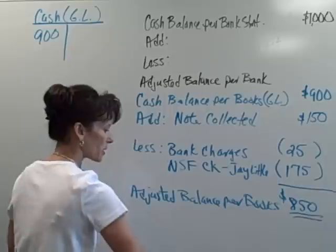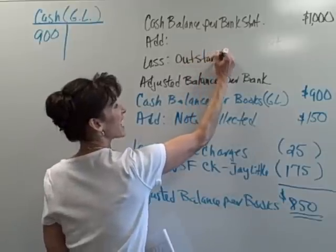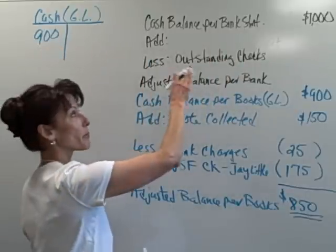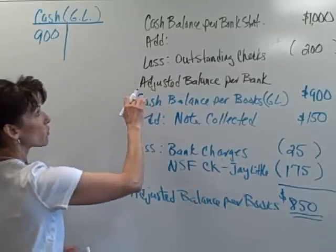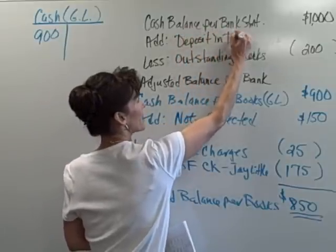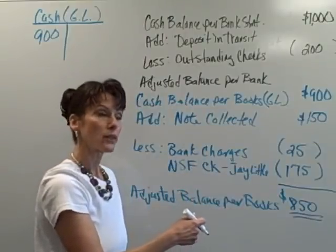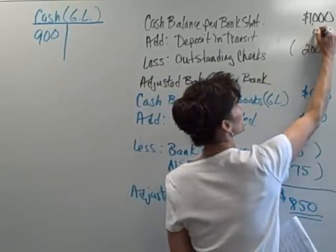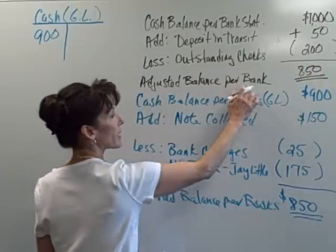Let's go back up to the top and look at things that may have affected our bank statement balance. One of the things is checks that we wrote that have not cleared the bank yet — we know we wrote them and we've already taken them out of our ledger, but they haven't cleared the bank. We want to subtract those out of the bank statement balance, so there's $200. The other thing is a deposit we made that may have been made after 3 o'clock on a business day, so it won't show up until the following business day. That deposit was for $50, and we're going to add that to the bank statement balance.